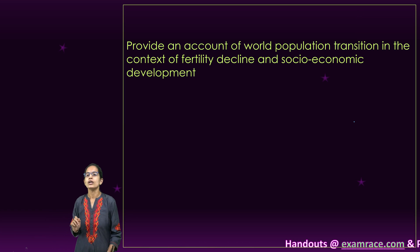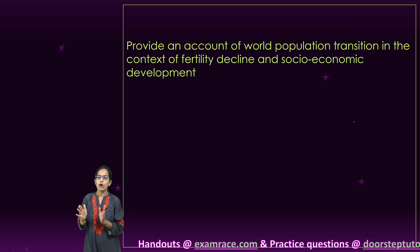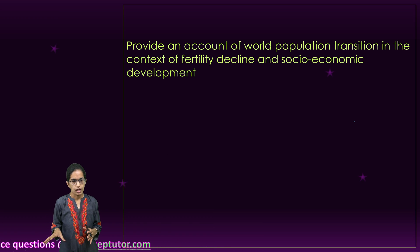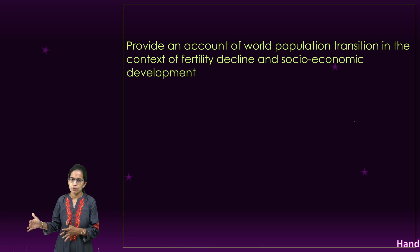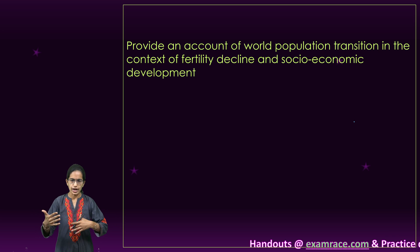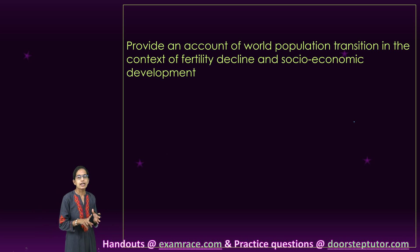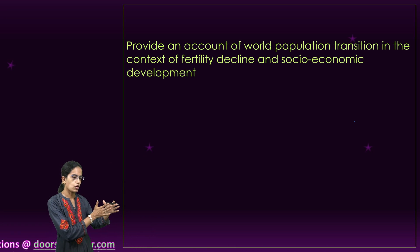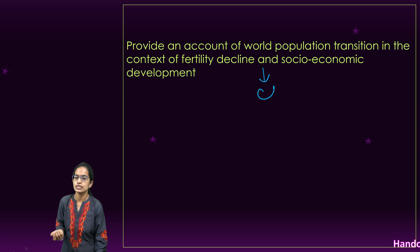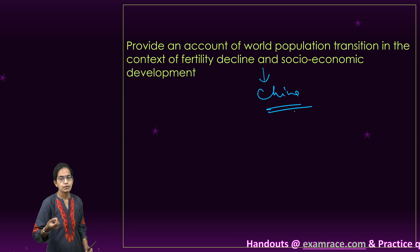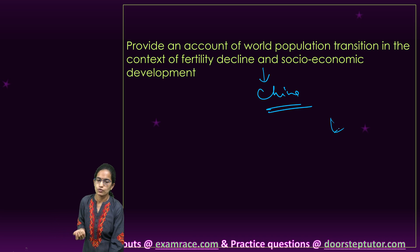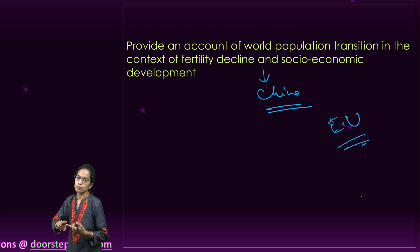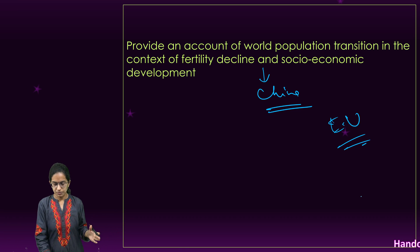The next question focuses on population transition in the context of fertility decline and socioeconomic development. This question talks about not just India but world population transition. You can classify it as developed nations versus developing nations, or a north-south divide, and explain how fertility decline is directly linked with socioeconomic development — as socioeconomic development increases, the proportion of children decreases. You can cite examples from China, European nations showing negative growth rates, in contrast to African nations showing very high growth rates.